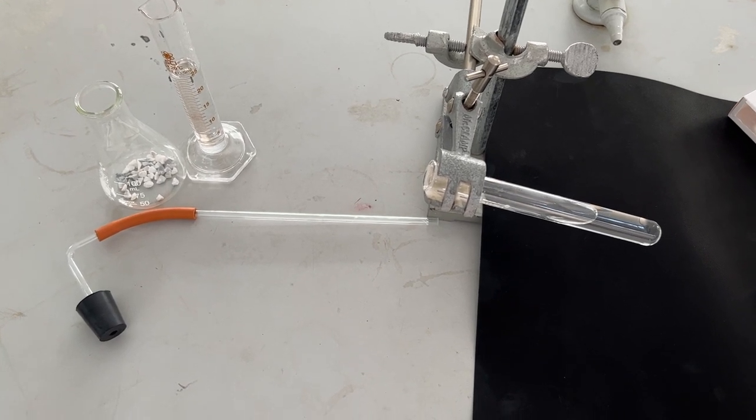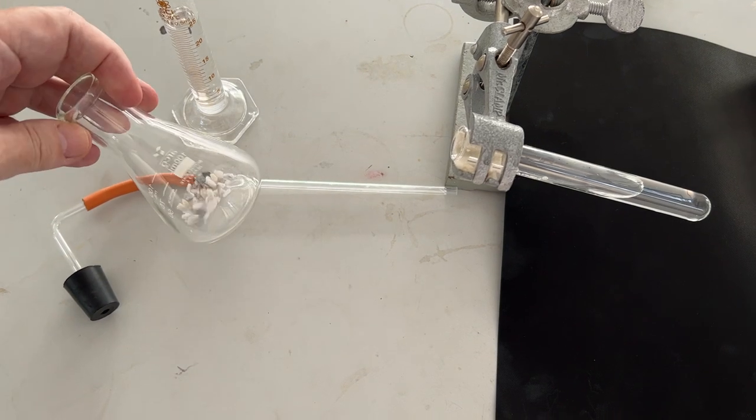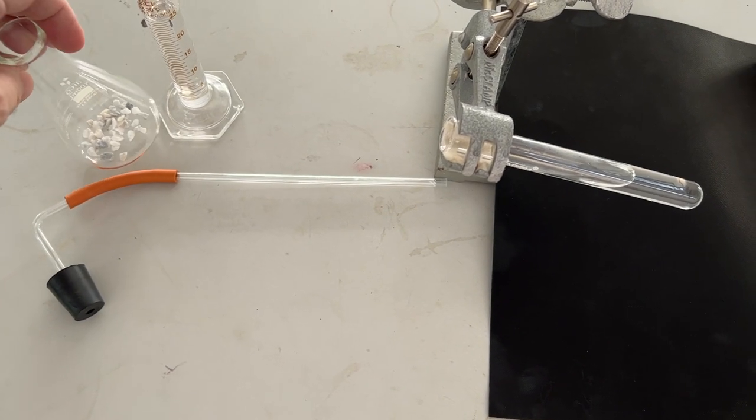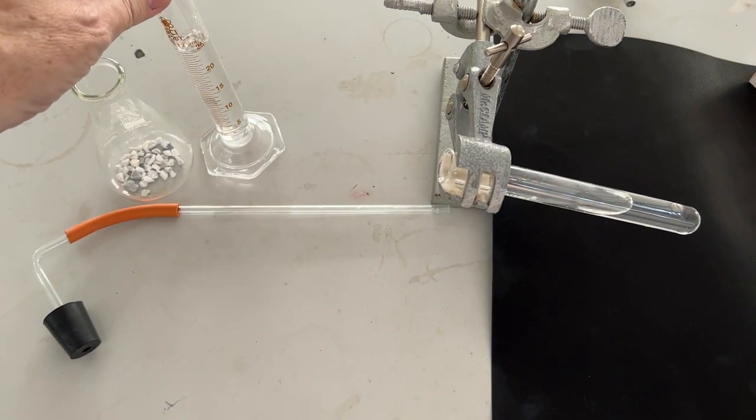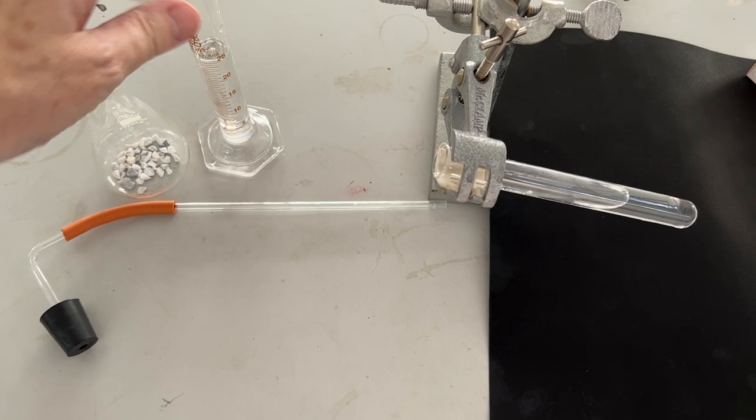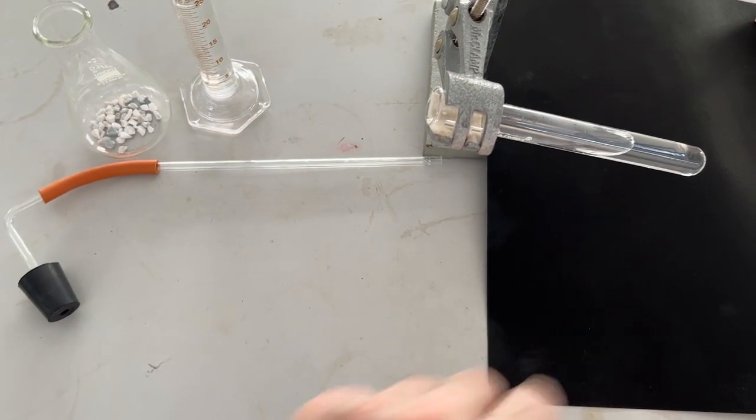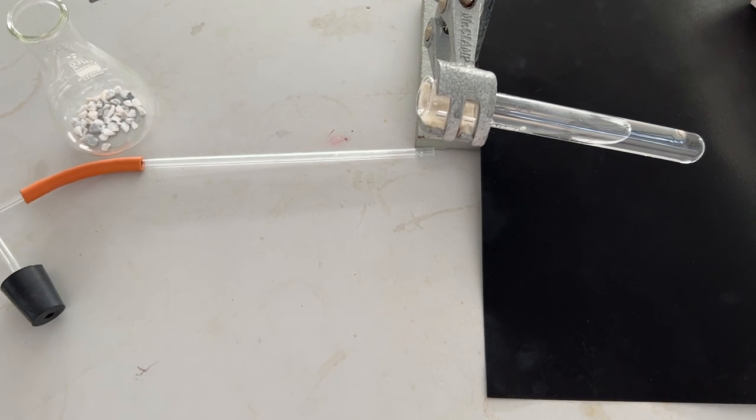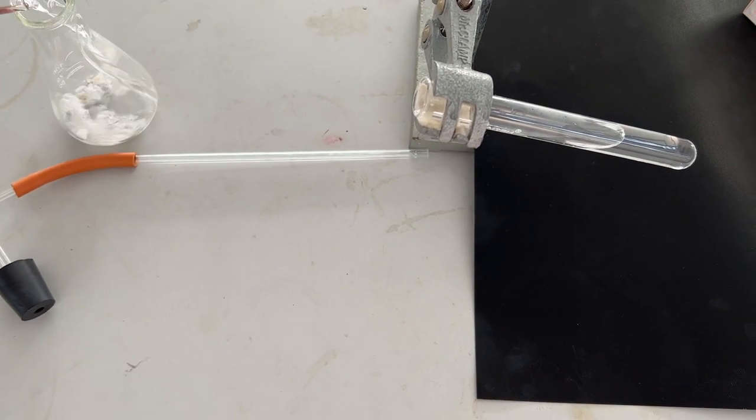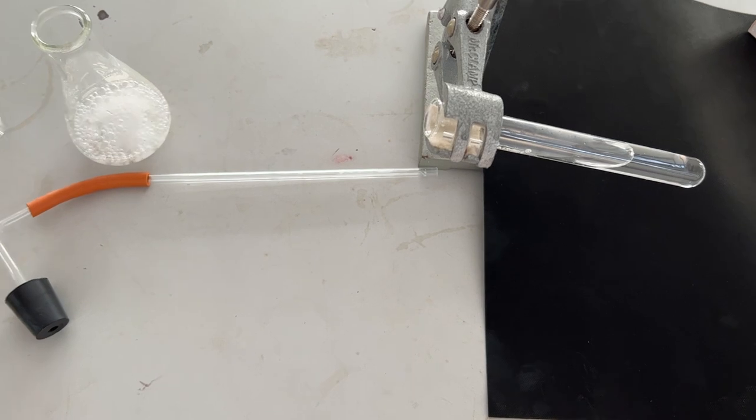Testing for carbon dioxide. Here we've got in the conical flask some calcium carbonate chips, two molar hydrochloric acid, and in the tube here some lime water. If we add the acid to the chips, we get the characteristic reaction of an acid with a carbonate.